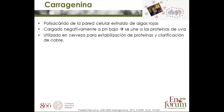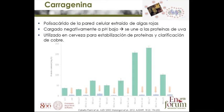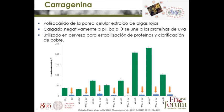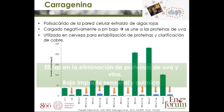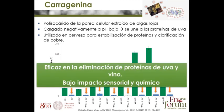Another option is carrageenan, a polysaccharide from the cell wall of red seaweeds, also negatively charged at wine pH, so it can bind to the positively charged wine proteins. It is already used in beer production. In an example using carrageenan on a series of eight wines, in each case the wines were deproteinized and stabilized upon addition of carrageenan. It works well in eliminating proteins with low sensory impact and is still being continuously developed.